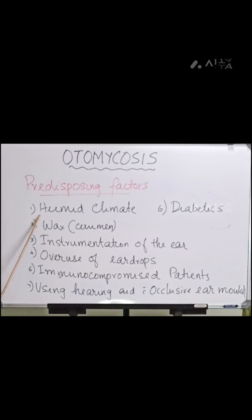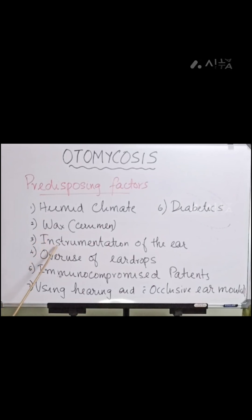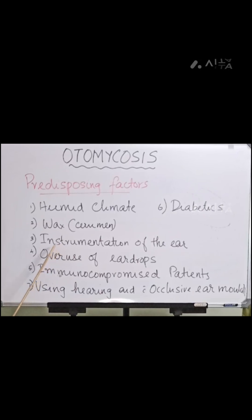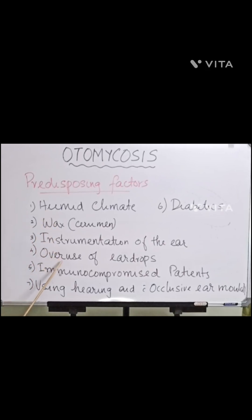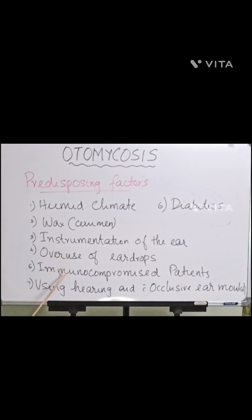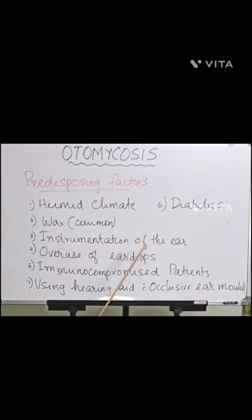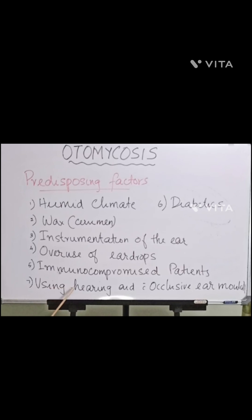People living in hot and humid climates have a predisposition for getting otomycosis. Other predisposing factors include presence of wax in the ear, frequent instrumentation of the ear canal such as cleaning with ear buds, and overuse of ear drops — particularly antibiotic or steroid preparations. Immunocompromised patients and those with uncontrolled long-term diabetes mellitus are also at risk, as are patients with open mastoid cavities and patients using hearing aids, especially with an occlusive ear mold.